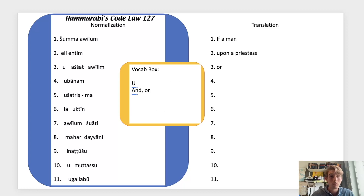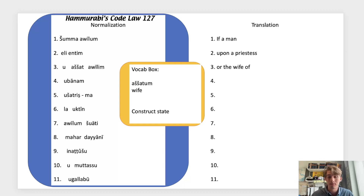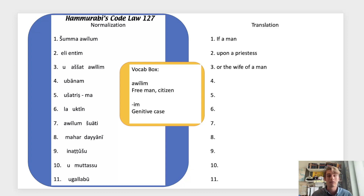Then we have u, meaning 'and/or,' followed by ašat — 'wife' — in the construct state. The construct state is a shortening where the case ending is dropped, showing a relationship of possession or prepositional connection. So awīlim is going to be the following genitive noun, giving us 'wife of a man.' When a noun in the construct state indicates 'of,' the following noun takes the genitive case ending -im.